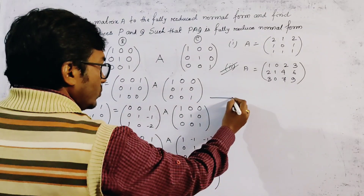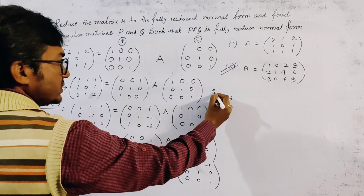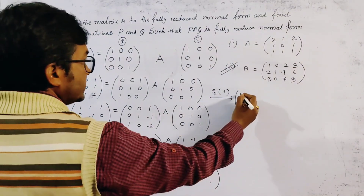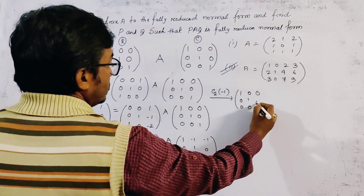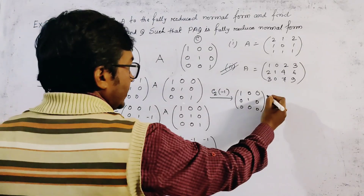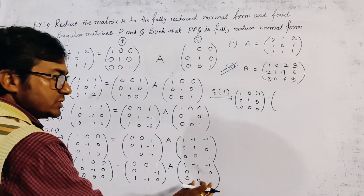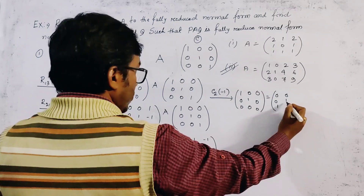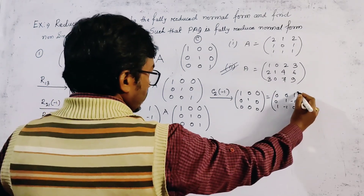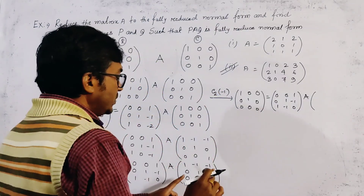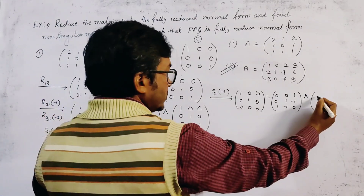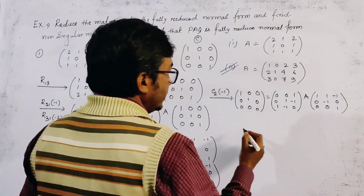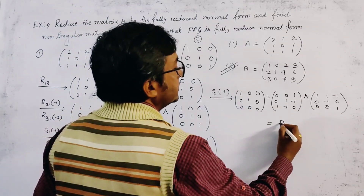Now we make the column operation C2(-1): multiply the second column by -1. This gives the left-hand side result [1,0,0; 0,1,0; 0,0,0], which is the fully reduced normal form of A. We apply this column operation to the right-hand matrix, giving first column unchanged, second column [1,-1,0] multiplied by -1 becomes [-1,1,0] — wait, second column of Q becomes [1,-1,0] with the sign corrected, and third column [-1,0,1].